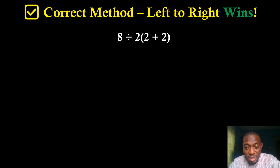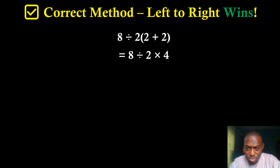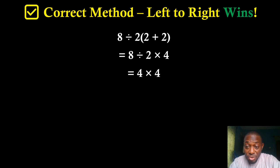The correct way of thinking: it doesn't matter which operation comes first, but when there is both a division and a multiplication in the expression, we go from left to right. We solve the bracket first — 2 plus 2 is 4. Then we do division first not because division has higher priority, but because it appears at the leftmost position in the expression. That is why we use division first.